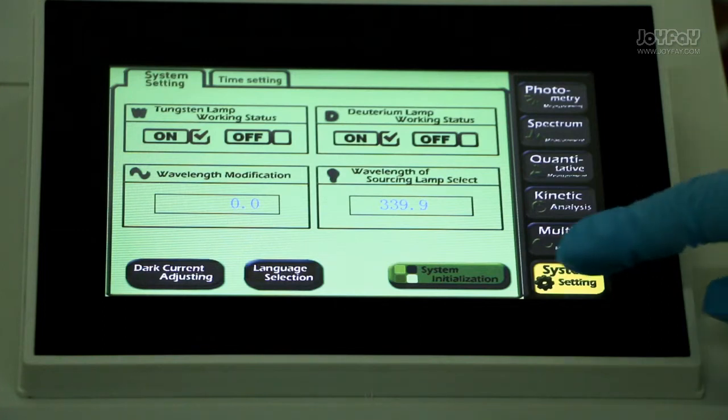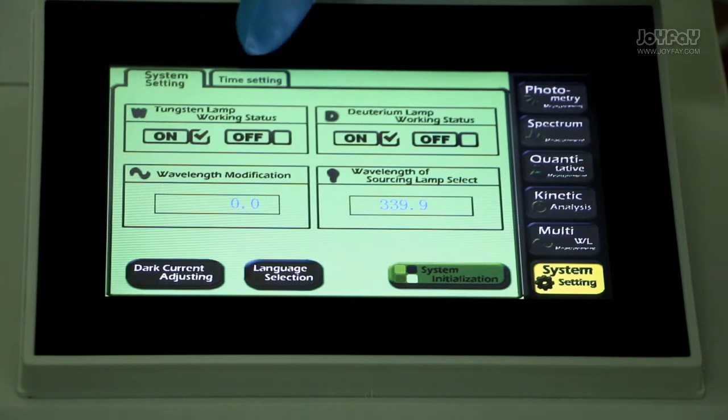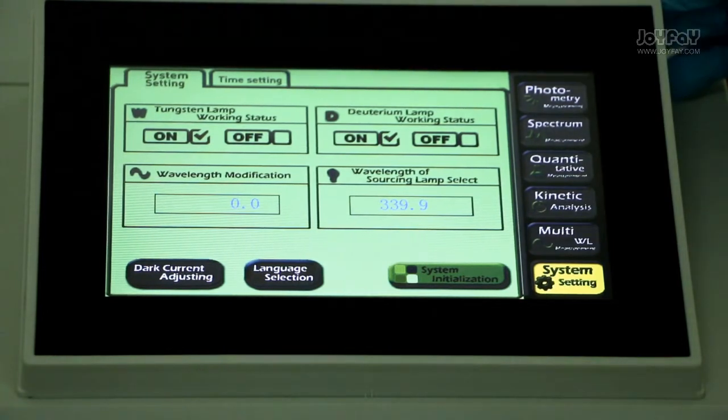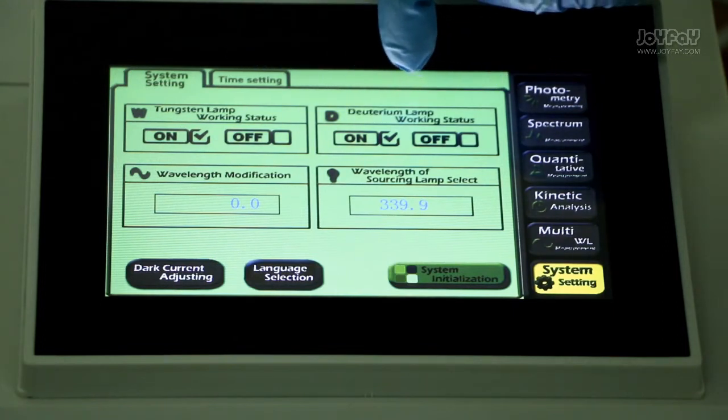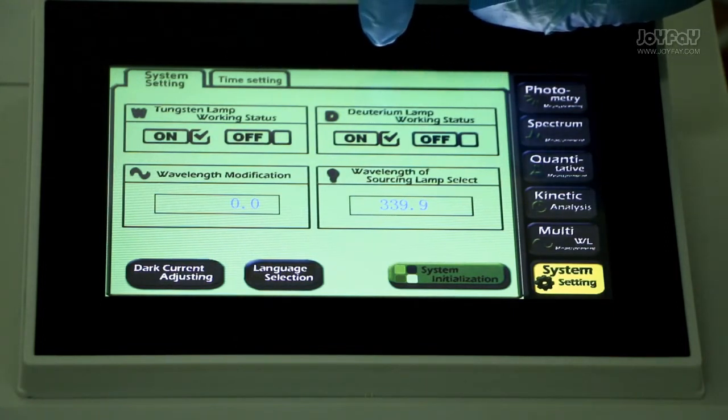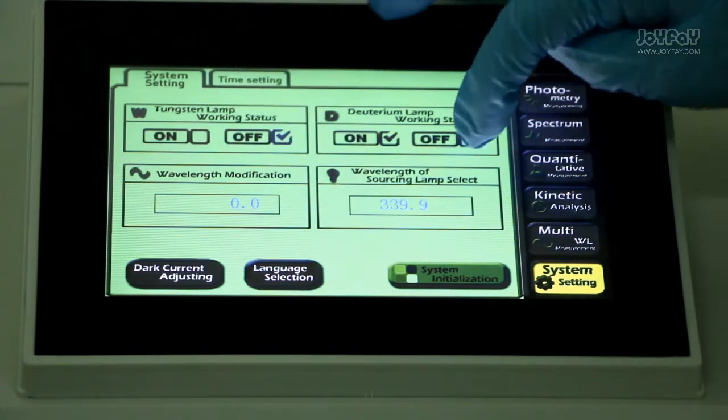We will come to system setting. Here we have two tags: system setting and time setting. Testing lamp working status, deuterium lamp working status. Press on to turn on the lamp and press off to turn off the lamp.